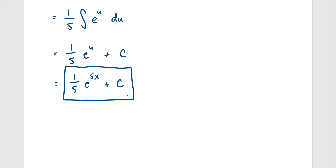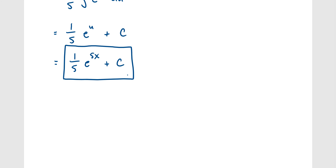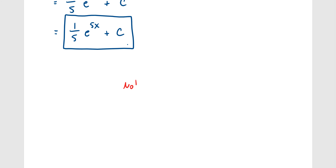In general, something to know off the top of your head: if you are integrating e to the kx, where k is a constant, the answer is going to be 1/k times e to the kx plus c. That's a nice shortcut to remember.